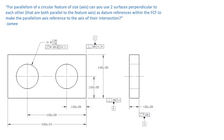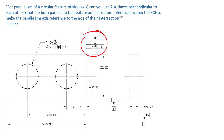Jamie asked: for parallelism of a circular feature of size, can you use two surfaces perpendicular to each other? What I've done here is: the primary datum A is qualified with a flatness of five thousandths requirement. So A is qualified with a form control — that's typical when you have a flat plane as a primary datum. Then for datum B, we're using perpendicularity of five thousandths back to A. That qualifies B. And up here, datum C has perpendicularity of five thousandths back to A and B. Those perpendicularity callouts on surfaces also control flatness of five thousandths.